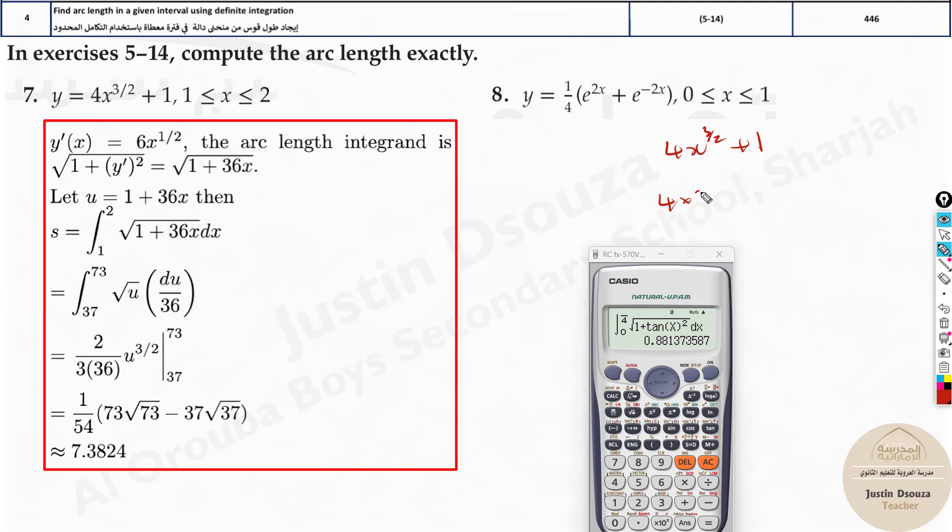It will be 3 by 2 times, 3 by 2 is 1.5, minus 1 is half. This is 0, so here it is 2 times, it's 2 times 3 is 6x power half, or 6 root x. Let's type it in the calculator here.